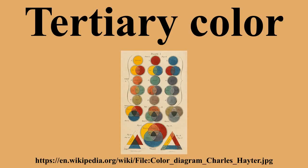A tertiary color is a color made by mixing full saturation of one primary color with half saturation of another primary color and none of a third primary color. In a given color space such as RGB, CMYK, or RYB, tertiary colors have specific names — one set of names for the RGB color wheel and a different set for the RYB color wheel. These names are shown below.